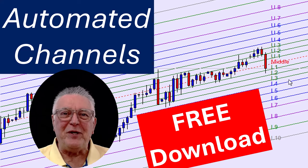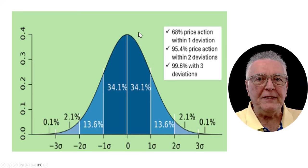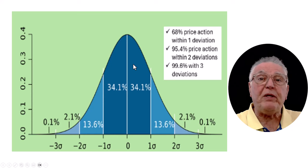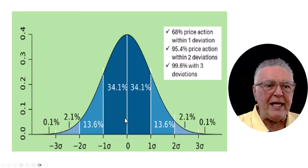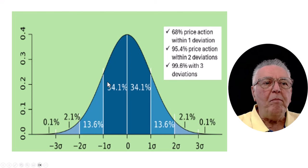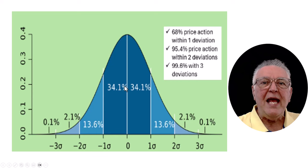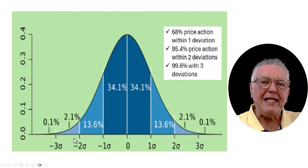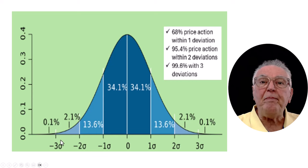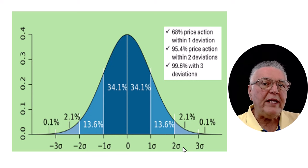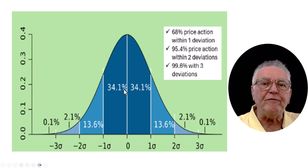To give you some background on how standard deviation channels work: they work off an average price for the price movement over a certain period — that could be a year or two weeks. The line in the middle is the average line. Most of the price action happens within 68% of that average line, then 95% happens within two deviations from the average, and 99% happens within three deviations.